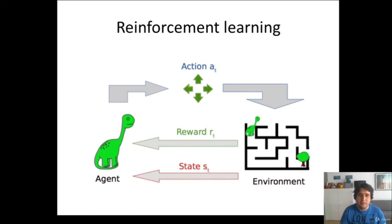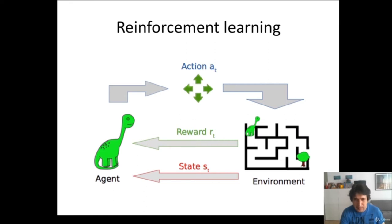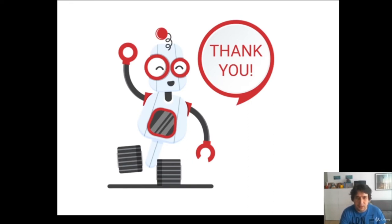Reinforcement learning: you have a game where a dinosaur is supposed to find a tree and can perform certain types of actions. Initially it tries random actions, but as it gets closer to the tree it gets more and more rewards. Over time it learns the most optimal way to reach the tree. This applies to other games like Atari games as well. If you have agents in a certain environment, reinforcement learning is probably one of your best bets. That's it for this video, see you next time.